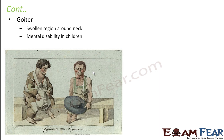Goiter is a condition where you would see a swollen region around the neck. Goiter happens due to the deficiency of the mineral iodine. Have you ever noticed in television advertisements for various brands of salt — they say 'iodized salt'? That means the salt contains a lot of iodine, because salt is a very good source of iodine, and if you do not have enough iodine in your body, that can cause goiter. Goiter can also cause mental disability in children — their mental growth doesn't really take place and they remain mentally retarded.